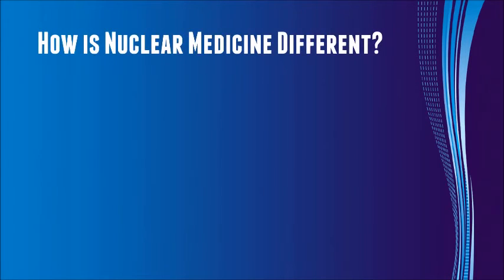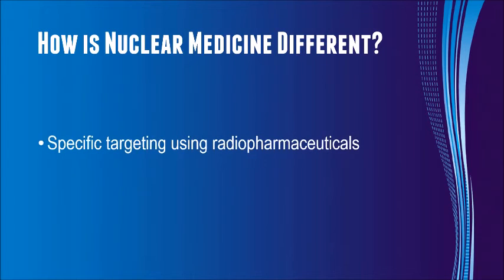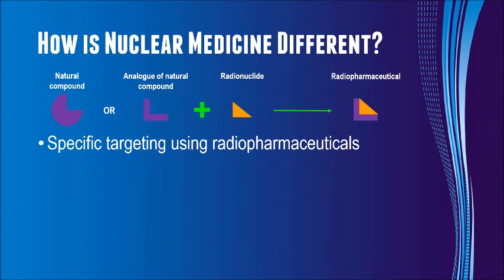What makes nuclear medicine so different from other medical imaging modalities? This means that nuclear medicine is more specific in its targeting. We use either compounds that are already found in the body or we introduce analogs that mimic these compounds. We combine these compounds or analogs with radionuclides to make radiopharmaceuticals.